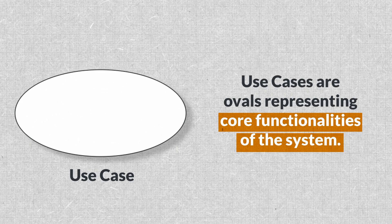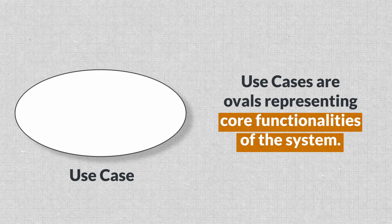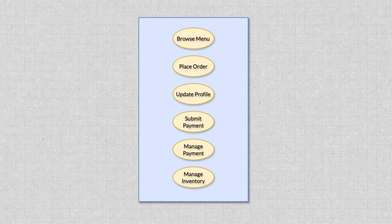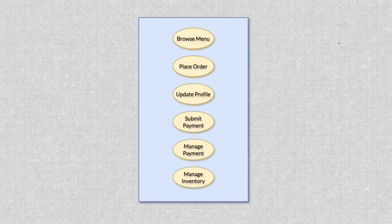Building on the actors we identify, let's explore what actions they take within the system — here's where use cases come in. Use cases are ovals representing the core functionalities of the system. Think of them like the verbs of your system, the actions, while the actors are the nouns. In our food ordering system example, use cases include actions like browse menu, place order, update profile, and submit payment. By focusing on use cases, you're making sure that your team is crystal clear on what the system should accomplish, not just its technical details.